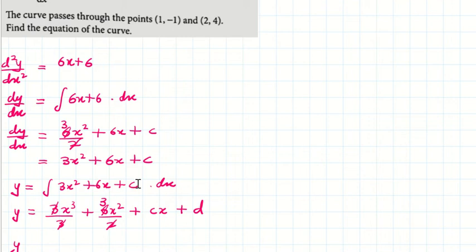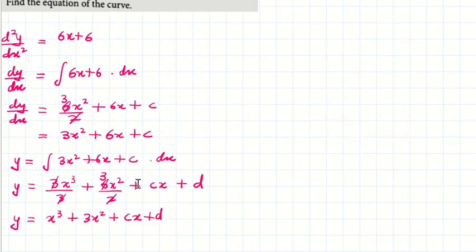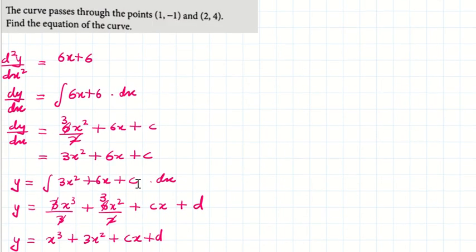Plus some other constant d. Canceling, y = x³ + 3x² + cx + d. Where c and d are to be determined. Now we can easily find them. We know these two points, so there are two unknowns and we get two points.